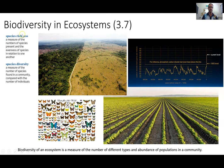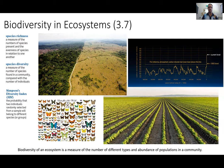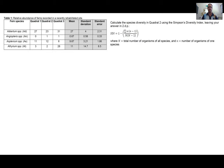So, talking about biodiversity in ecosystems, we can have two main measures to give us an idea of biodiversity. Species richness is a measure of the numbers of species present and the evenness of species in relation to one another. Whereas, species diversity is a measure of the number of species found in a community compared with the number of individuals. We're going to look at these two things a little bit more now by calculating Simpson's diversity index. So, we've done a little bit of this in class. Here is a table representing three quadrats and the mean, standard deviation, standard error, but the question is to calculate the species diversity in Quadrat 2 using the Simpson's diversity index, leaving your answer in two decimal places.